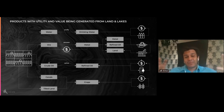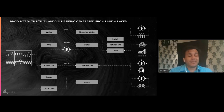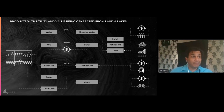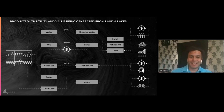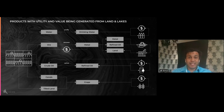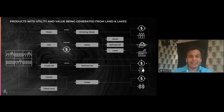It gets even more interesting when you think about using these extracted resources to create new products through a manufacturing process. You can forge metallic products from extracted ore, purify and package water to sell as bottled water, till the land, sow seed, and grow crops. Even more interesting, you can combine these products — combining ore, metal, and oil to build an engine; building canals to irrigate your crops with water; or routing water to a hydroelectric pump run by that engine you developed.